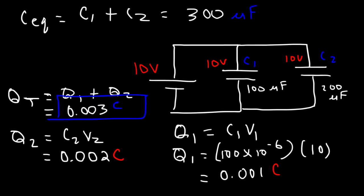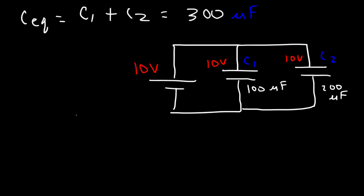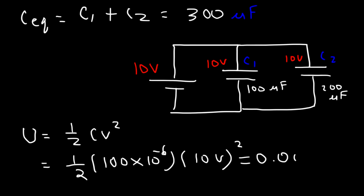Now, how can we calculate the energy stored in C1? What is the electric potential energy stored in that capacitor? One equation that you can use is 1/2 CV squared. So it's 1/2 times 100 times 10 to the minus 6, that's the capacitance, times the voltage across that capacitor, which is 10, and don't forget to square. So this is equal to 0.005 joules, which we could say is about 5 millijoules.